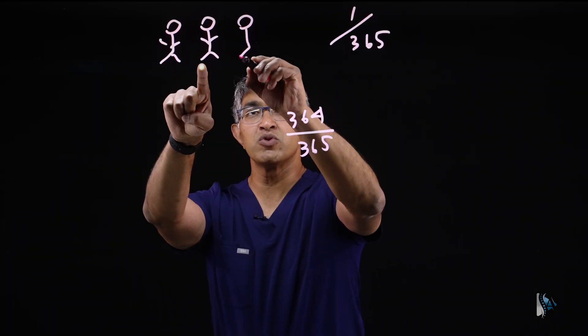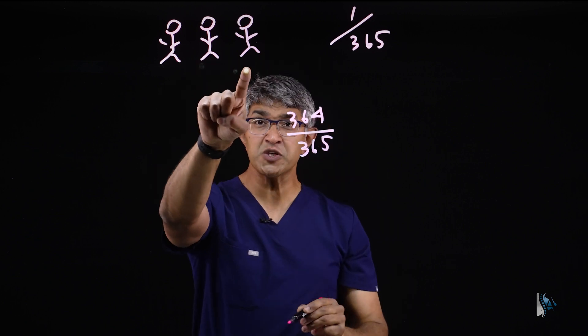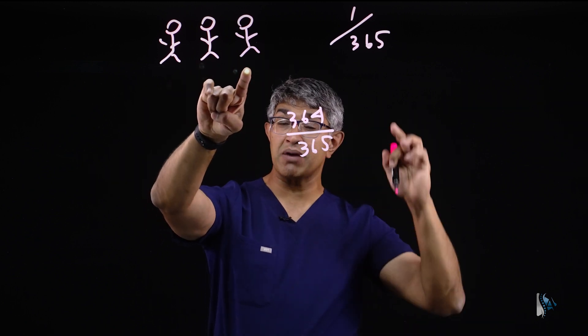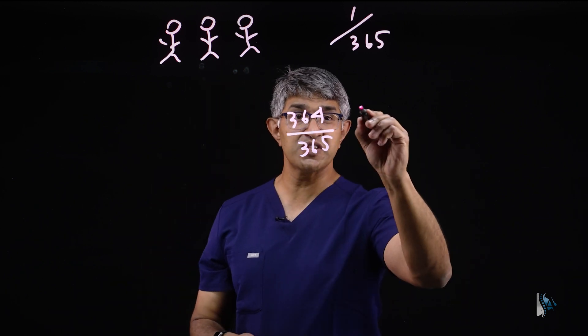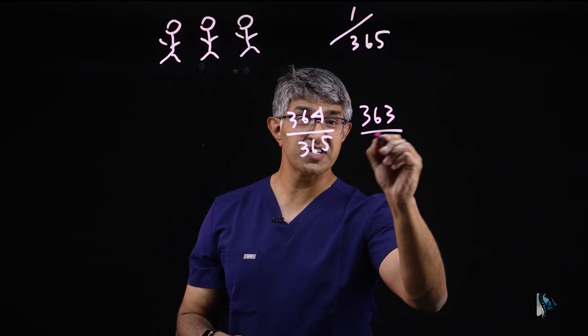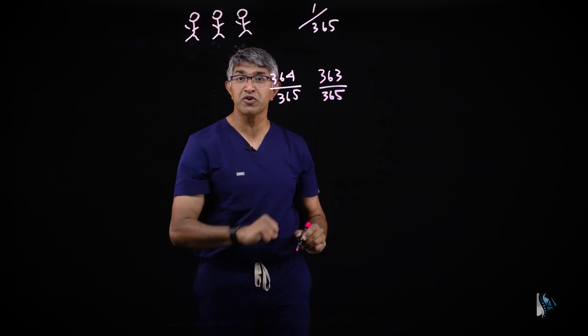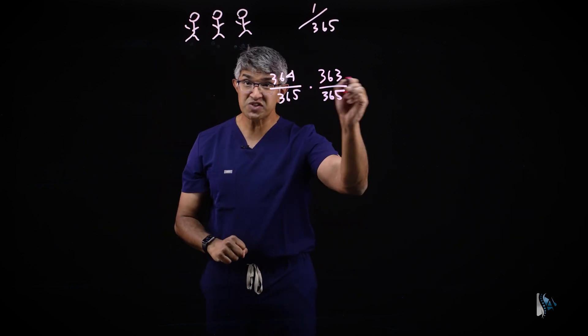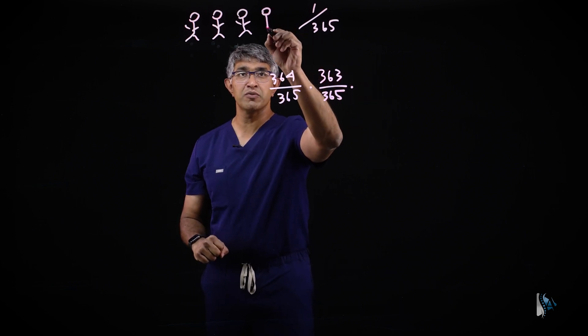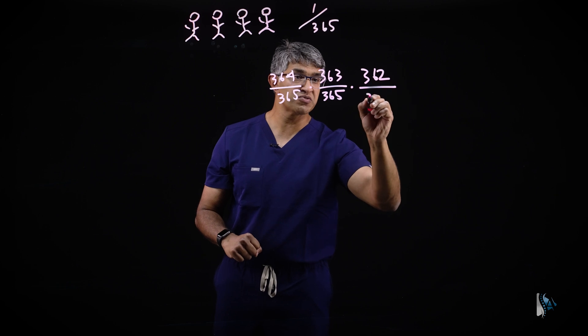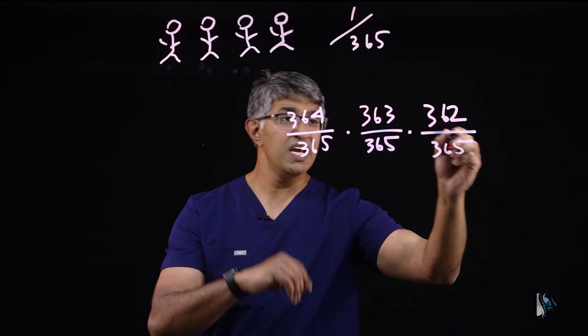But now imagine a third person walks into the room. What's the probability that this person has one of these birthdays? The probability that they do not is 363 over 365. In other words, you have to say one for this, one for this, you take both of them off. And this 363 over 365, obviously this continues. You can put another person here. The probability that this next person has neither of those birthdays is 362 over 365, et cetera.